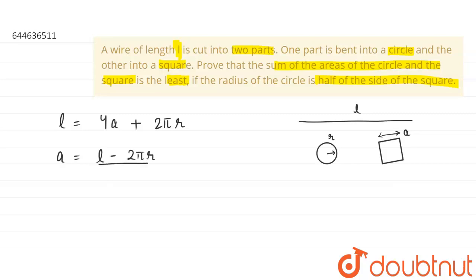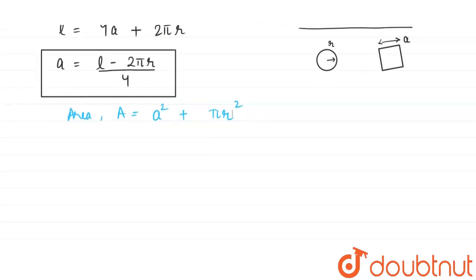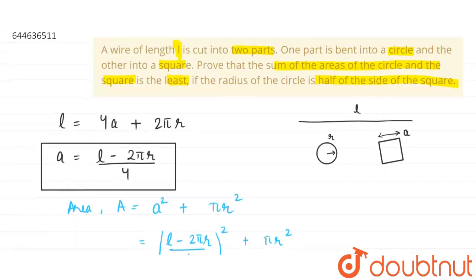The total area A is the sum of the area of the square and the area of the circle: A = a² + πr². Substituting the value of a, we get A = [(L − 2πr) / 4]² + πr².